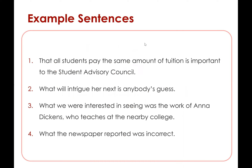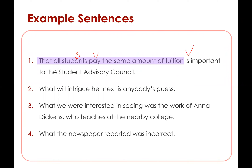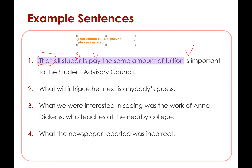These are our example sentences. Number one: that all students pay the same amount of tuition is important to the Student Advisory Council. Right away you can see, why are there two verbs with no conjunction? Students pay and then is. So what this is, is a that clause functioning as subject. And that is why we have to remember one fundamental rule: a that clause, like a gerund phrase, when it is a subject, it is singular.